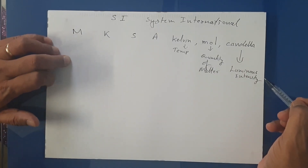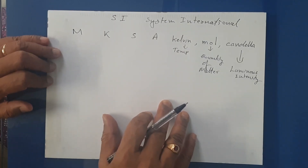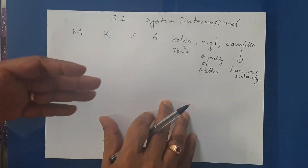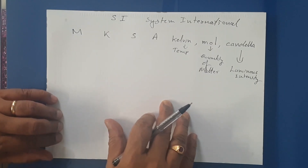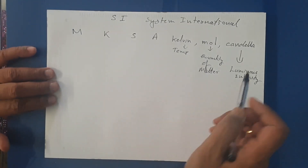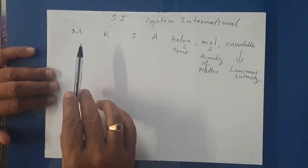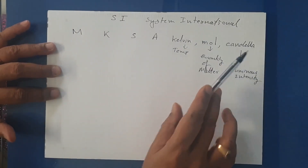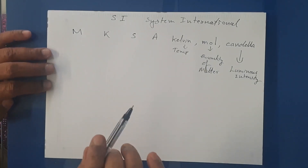Luminous intensity gives the measure of illumination. You have one electric bulb lit up in a room — it illuminates the room by a certain amount. If you have two or three more bulbs with higher wattages lighting up a room, the illumination increases. To compare those levels of illumination we have a unit called candela. So in SI, how many fundamental quantities do we have? One, two, three, four, five, six, seven — seven fundamental quantities in the SI system.